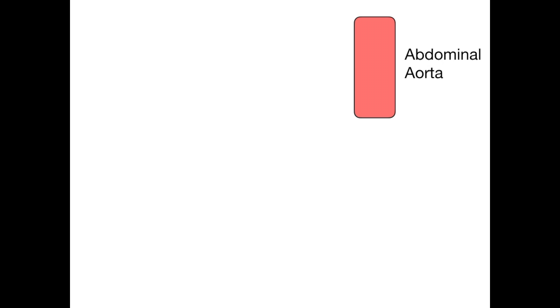The abdominal aorta descends through the abdomen, and the celiac trunk is really the first major exit point from it. The first high-yield thing to know is that the celiac trunk exits the abdominal aorta at the level of T12. Commit that to memory: T12 is where the celiac trunk comes out of the abdominal aorta.